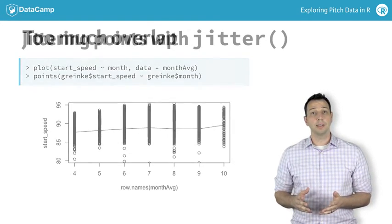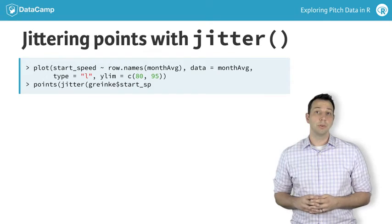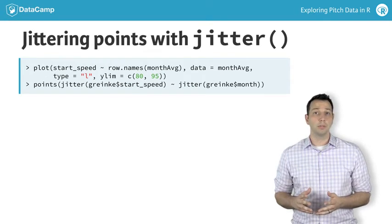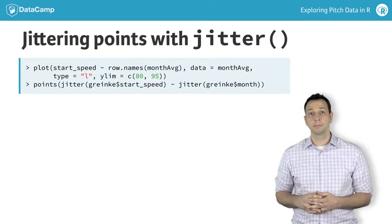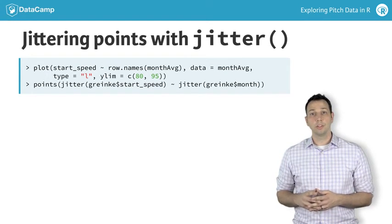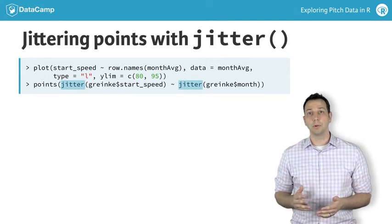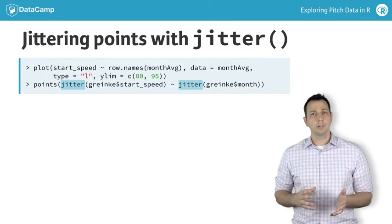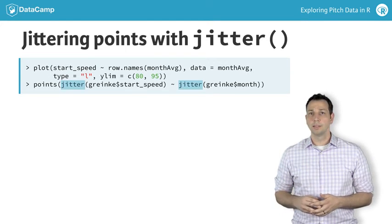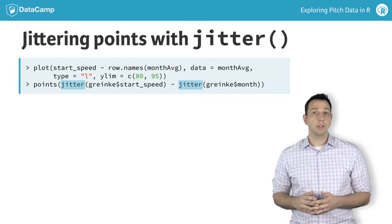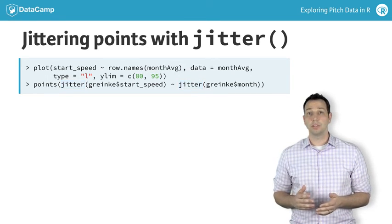We can fix this with the use of the jitter function wrapped within the points function to add them to your plot. The jitter function is useful when you have many individual points overlapping one another. Jitter slightly spreads these out either across the y-axis, the x-axis, or both, so that you can have a better idea of the number of pitches in each game.